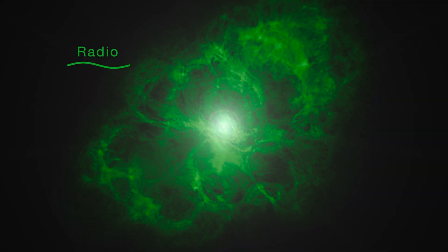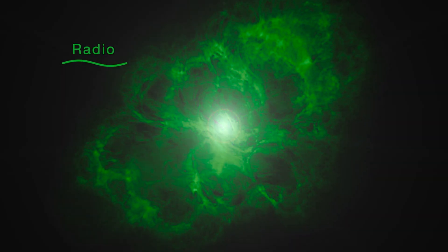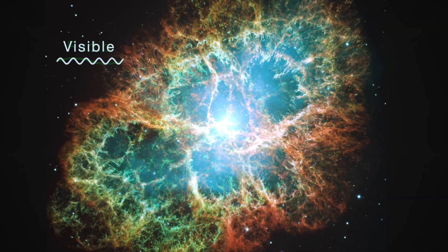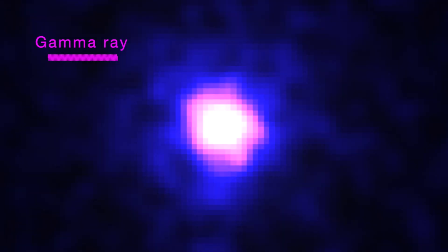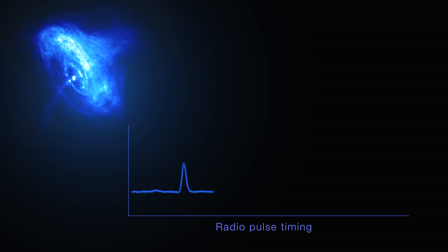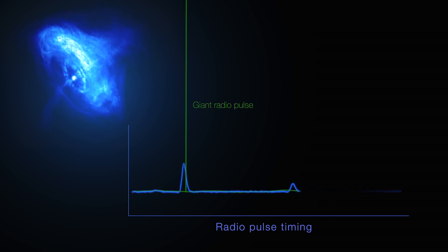The Crab Pulsar spins 30 times a second and steadily blinks in radio, visible light, X-rays, and gamma rays. But it also emits random jumbo bursts called giant radio pulses that can be more than ten times stronger than its regular signals.